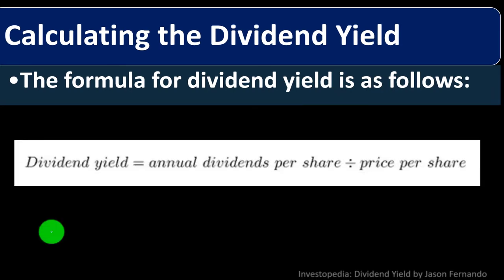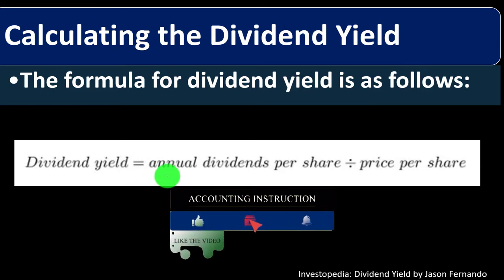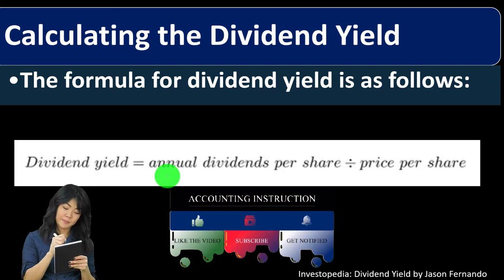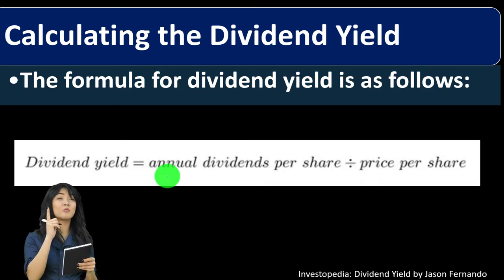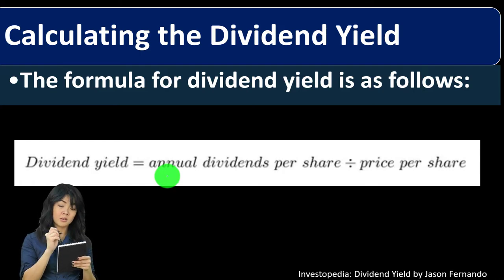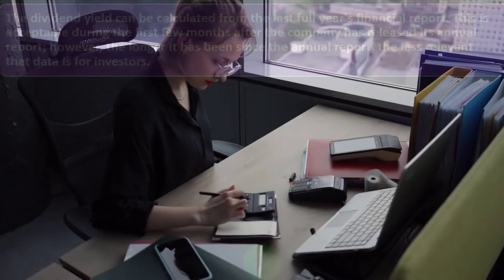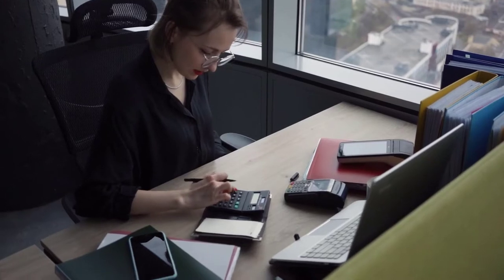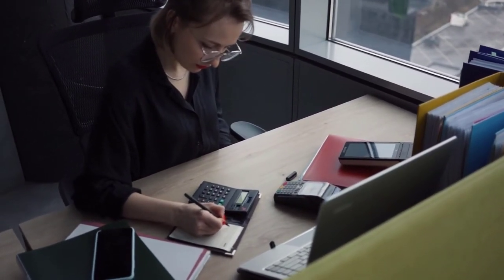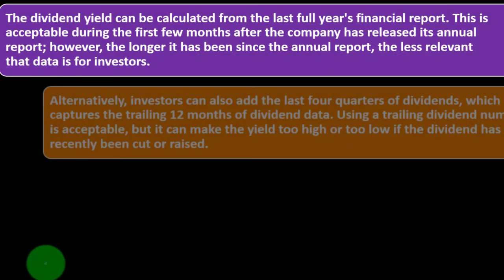Calculating the dividend yield: the formula is annual dividends per share divided by price per share. Note that we annualize the dividends — whether they're paid annually or in other intervals — when calculating. The dividend yield can be calculated from the last full year's financial report, which is acceptable during the first few months after the annual report is released. However, the longer it has been since the annual report, the less relevant that data is for investors, as it becomes less useful for predicting current valuations.